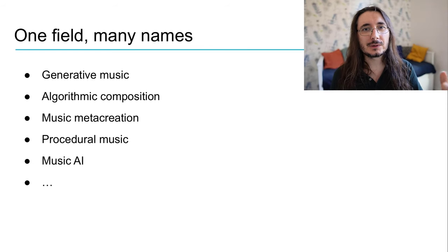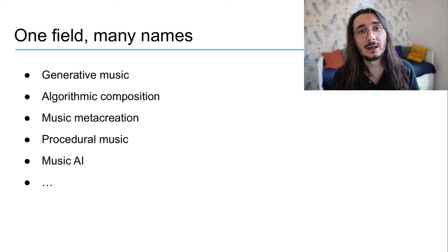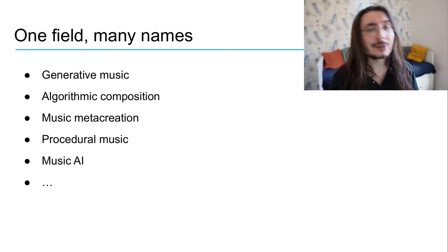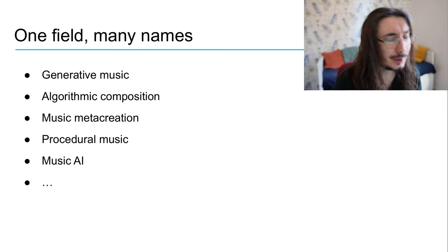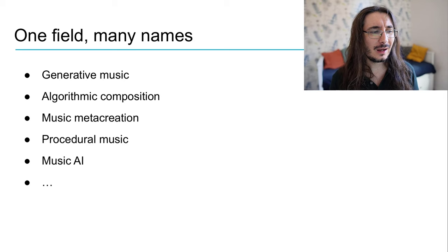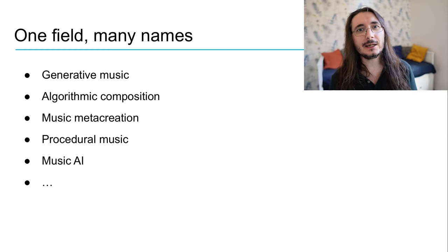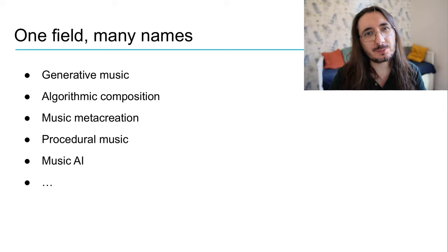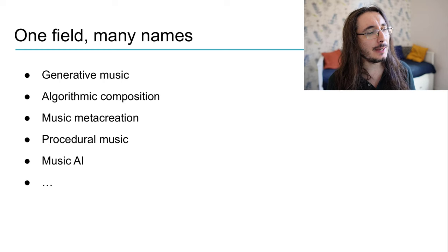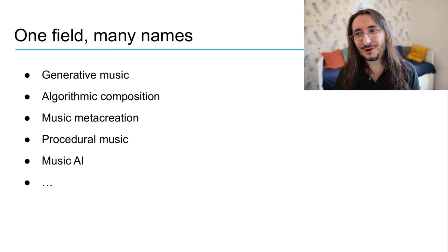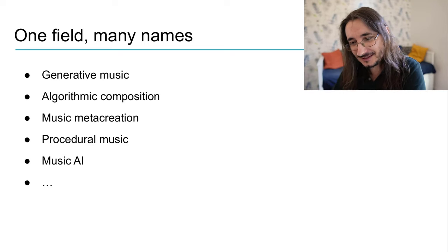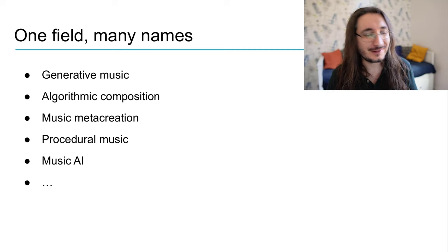Different people refer to generative music with different names. The one I love the most is just plain generative music — I think it was introduced by Brian Eno a few decades back — but there are a lot of other names for this discipline. For example, algorithmic composition, music metacreation, procedural music, and music AI or creative music AI. Algorithmic composition used to be quite trendy before machine learning and AI, being more about algorithmic processes. Music metacreation was introduced by Philippe Pasquier and his research group — the idea being that we create a system that creates music, so we're at a meta level, which is super cool.